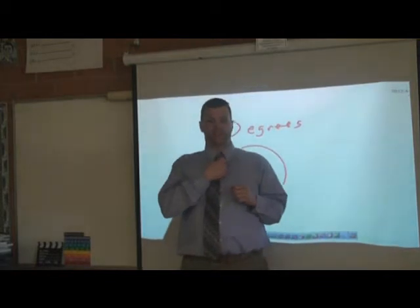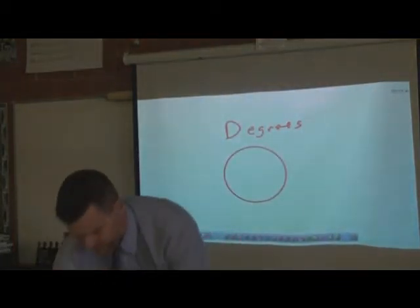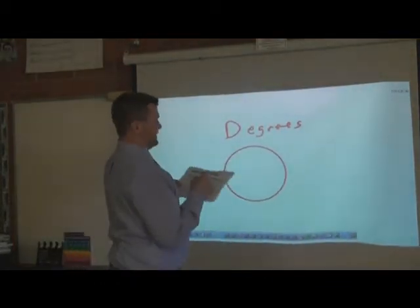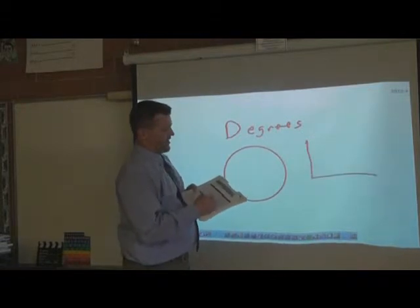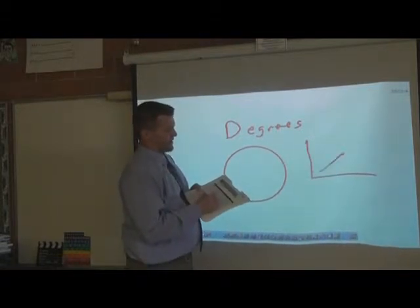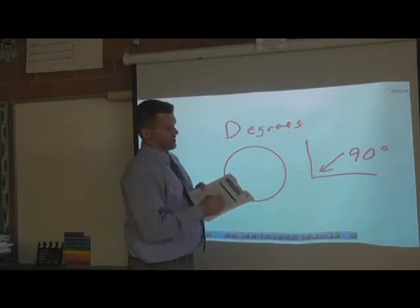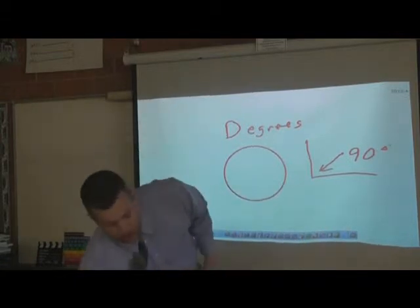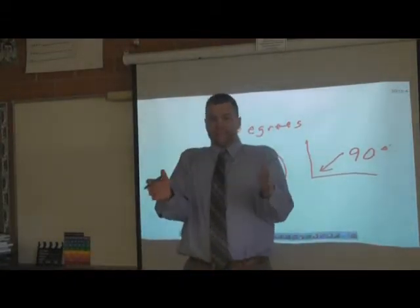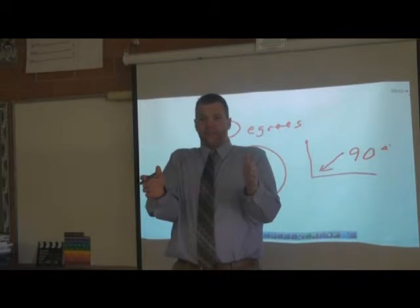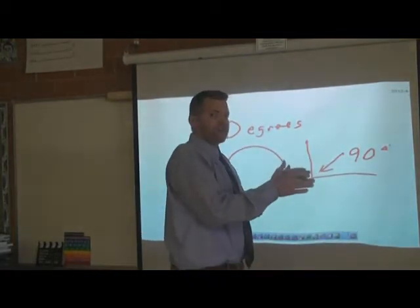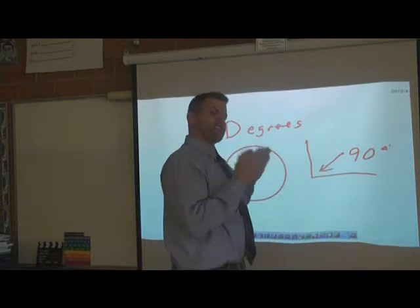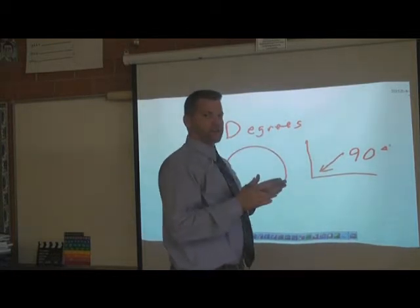That's a 90 degree turn. If you look at this angle here, it's a perfect 90 degree turn. If we're standing here facing this way and we turn, we do a one-fourth of a turn, which is a 90 degree turn.